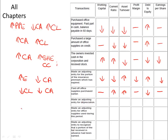If we make the adjusting entry for depreciation, we increase the depreciation expense and we reduce property, plant, and equipment, which is a long-term asset. There's no impact on working capital or current ratio, since those accounts were not impacted. Asset turnover will increase, profit margin will decrease because expenses went up, and debt to equity will increase.